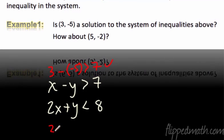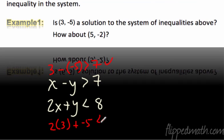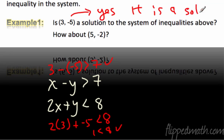What about (3, -5) down here? 2 times 3 plus negative 5. Is that less than 8? So we get 6 plus negative 5, which is 1. Is 1 less than 8? Yes, it is. So (3, -5) is a solution. So yes, it is a solution. Perfect.